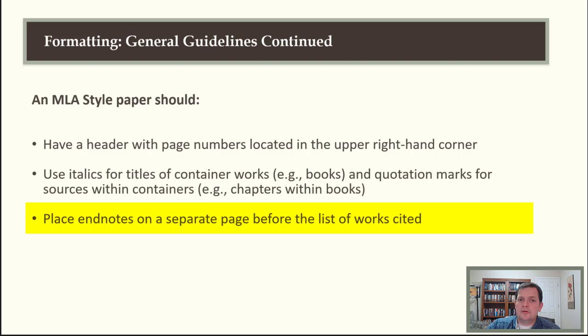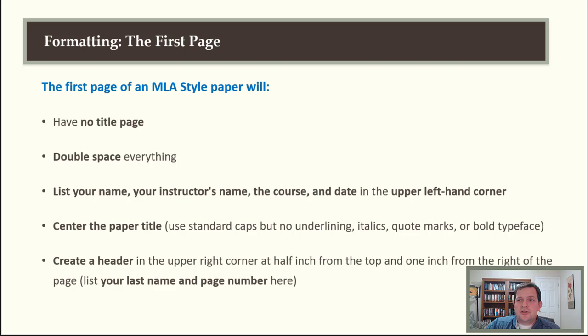In some more advanced writing scenarios you may use endnotes, generally placed before the works cited list. We will not use endnotes in any papers you turn in to me for this class. The first page will have all of these components. First, there is no title page—that is not the case with MLA. You must double-space everything. The heading on the first page will have four elements in this order: your first and last name, then your instructor's name—in my case, Mr. Wheeler.